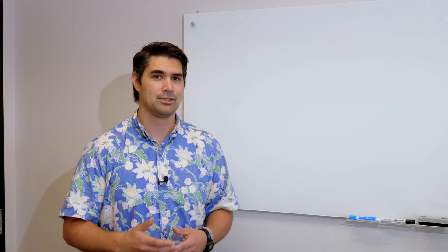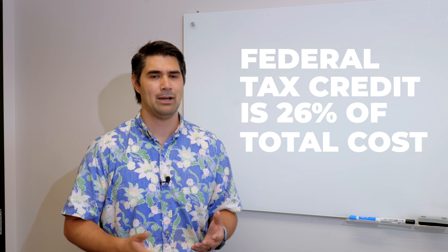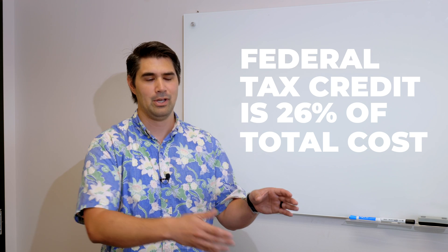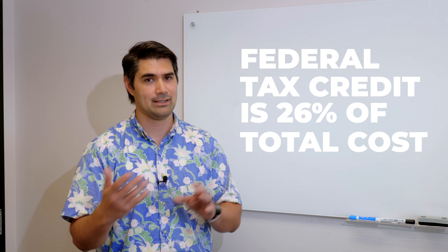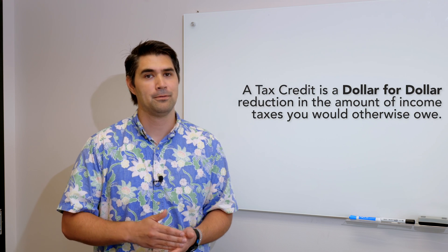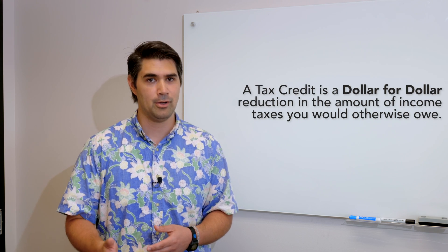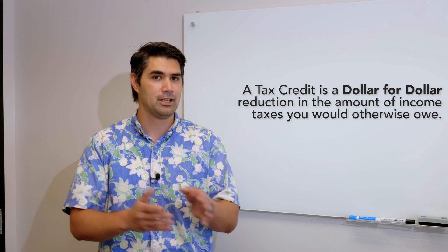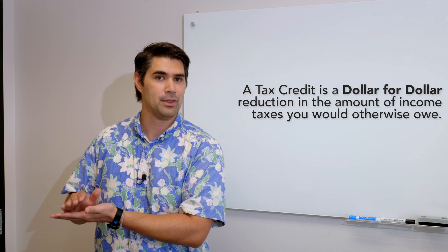The federal tax credit is currently set at 26% and that one's pretty easy to calculate. It's just whatever you're paying for your solar, 26% of that is the tax credit. So a tax credit is a dollar-for-dollar reduction in the amount of income taxes you would otherwise owe. For example, if you have a thousand dollar tax credit then your income taxes would be reduced by one thousand dollars.